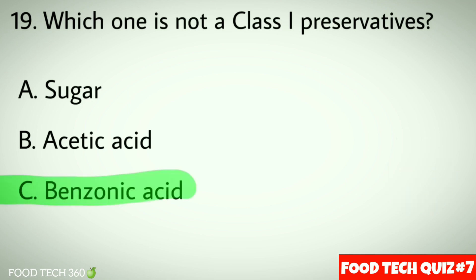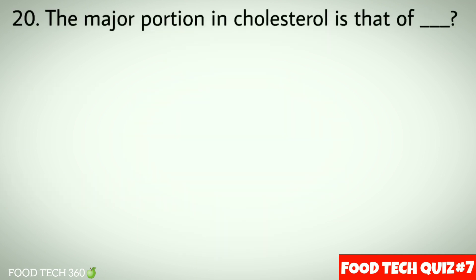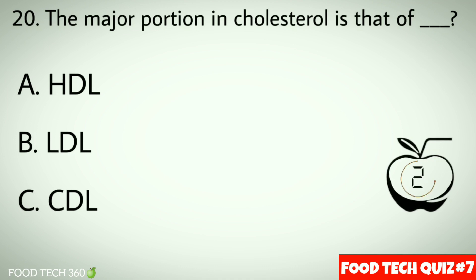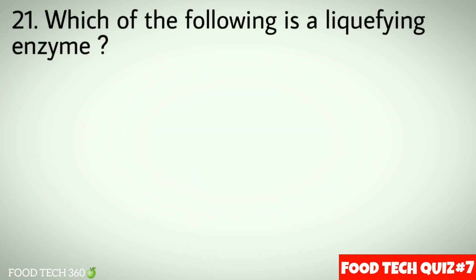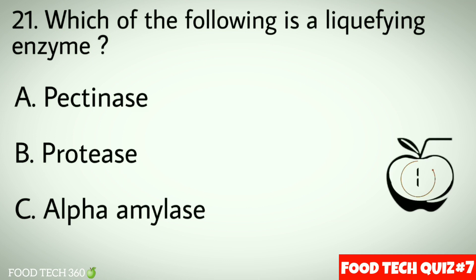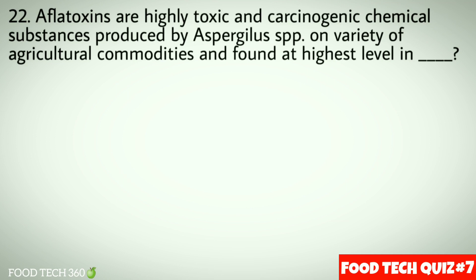Correct answer: c) Benzoic acid. Question number 20: The major portion in cholesterol is that of — options: a) HDL, b) LDL, c) CDL. Correct answer: b) LDL. Question number 21: Which of the following is a liquefying enzyme? Options: a) Pectinase, b) Protease, c) Alpha amylase. Correct answer: c) Alpha amylase.